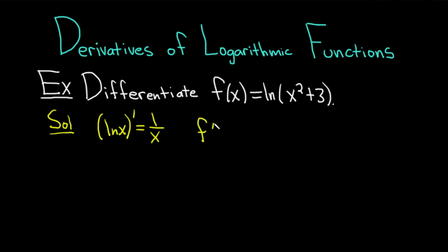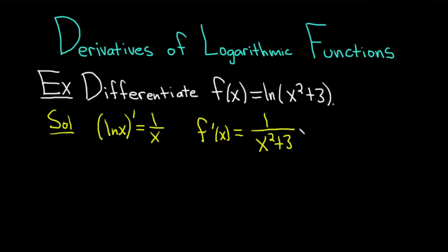So f prime of x — you take the derivative of the outside and leave the inside untouched. Using this rule, it's 1 over, but instead of x, we have x squared plus 3. Then you multiply by the derivative of the inside. The derivative of x squared is 2x via the power rule, and the derivative of 3 is 0, so you just get 2x.